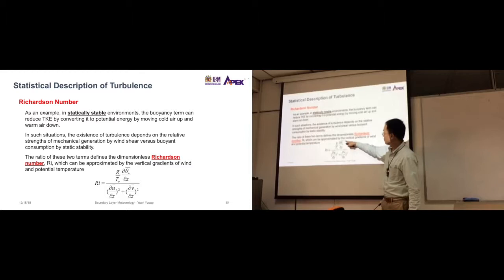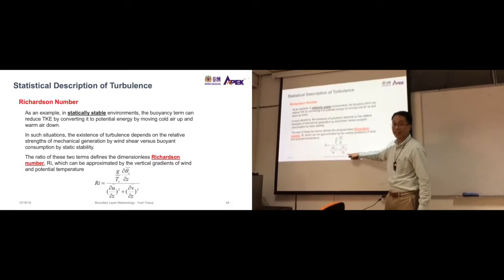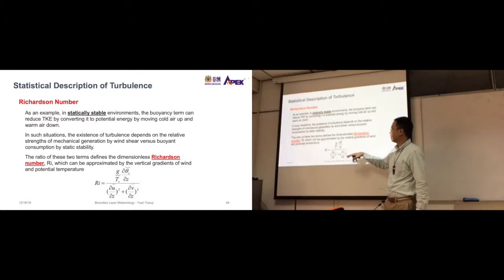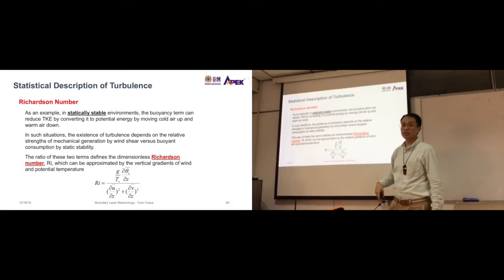This del theta over del z is the temperature gradient. And that is the buoyancy term. And du over dz and dv over dz is the wind gradient. So buoyancy over mechanical generation of turbulence. So let's say if Richardson number is large, then the buoyancy term is large. Turbulence is generated by buoyancy, more than mechanical. If this value ri is less than one, then we can guess that the buoyancy term is low, while the mechanical term is large.